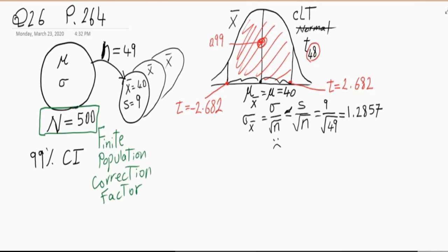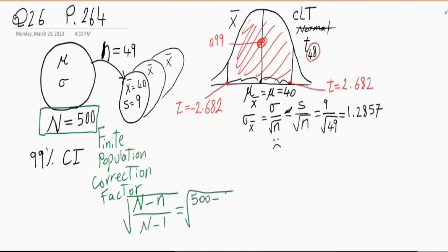We apply the finite population correction factor, which is √((N−n)/(N−1)). In this case that is √((500−49)/(500−1)) = √(451/499). Is this bigger than 1 or smaller than 1? This fraction is always smaller than 1 because the numerator is always less than the denominator — the sample size is always more than 1, so the correction factor always turns out to be less than 1. In this case it equals approximately 0.9507.